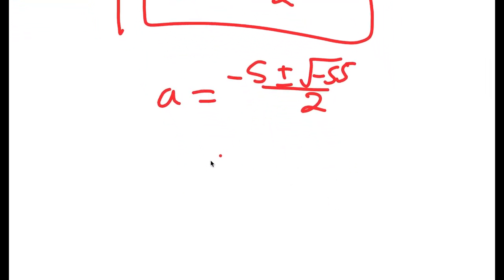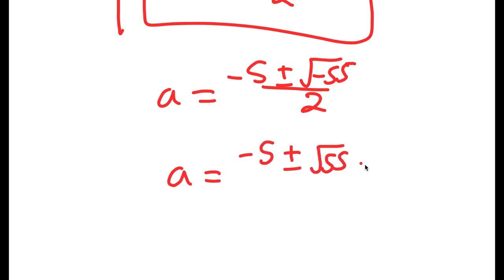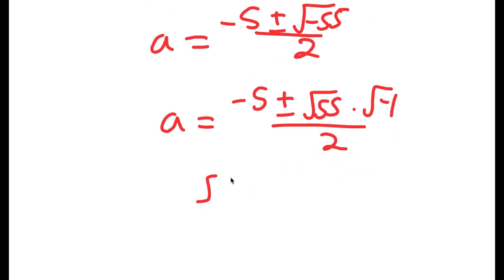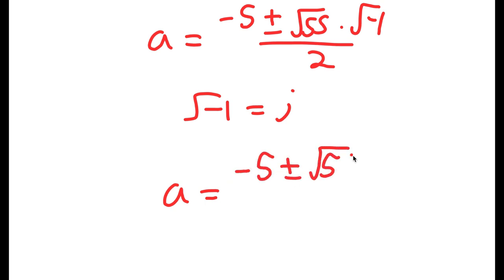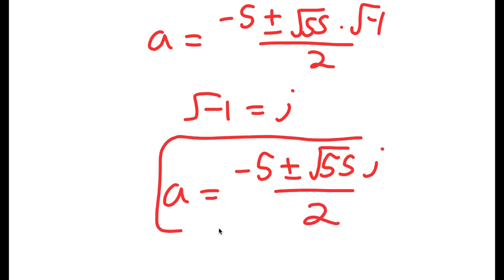The square root of negative 55 can be rewritten as the square root of 55 times the square root of negative 1. The square root of negative 1 is equal to i. So replacing that, I get a equals negative 5 plus or minus the square root of 55 times i, all over 2. That's how I got the square root of 55i.